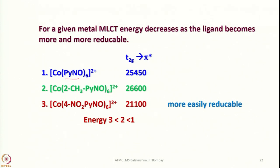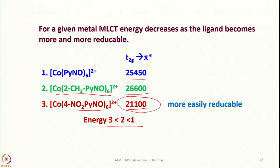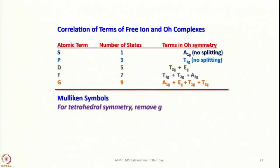Let us look at an example: for pyridine N-oxide we have a T₂g → π* salt transition at 25,450 cm⁻¹. As energy increases or decreases depending on the ligand, one can see the impact of ligand structure on MLCT. We shall also try to make ourselves familiar with atomic term symbols — the number of states, what atomic term they correspond to, and Mulliken symbols for different orbitals.